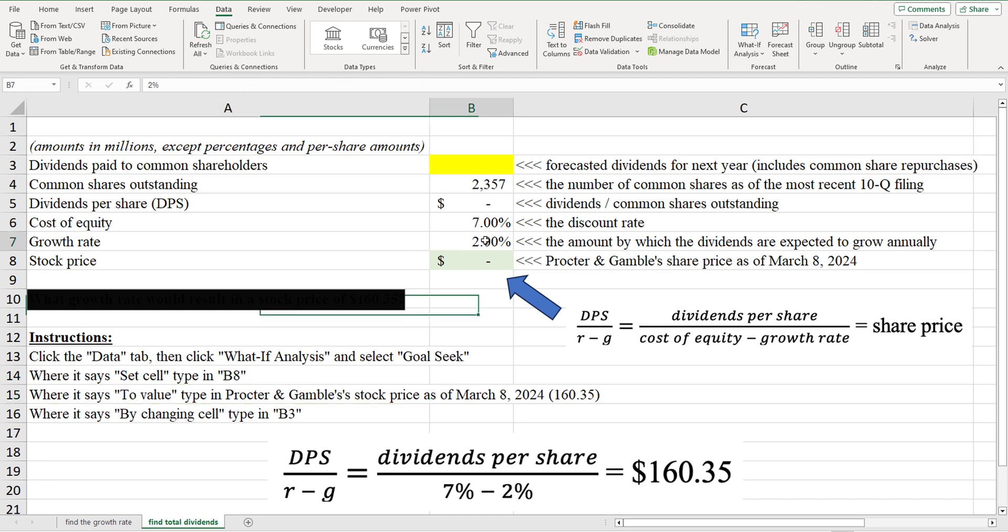We're fairly confident that there's an expected growth rate of 2%, that the dividends are going to grow at 2% every year forever, and that the cost of equity, that we know that. And of course, again, we know the share price we've observed is $160.35. So now we're basically saying, look,